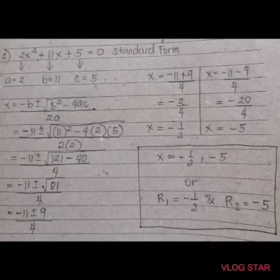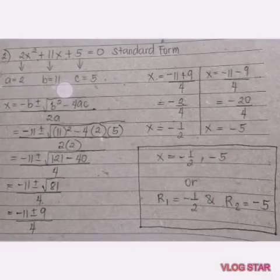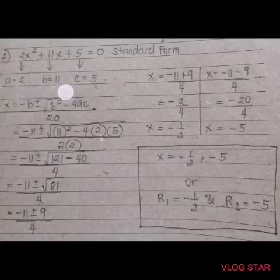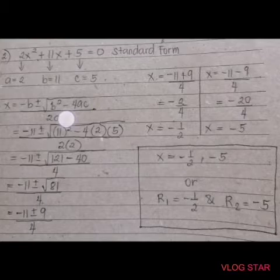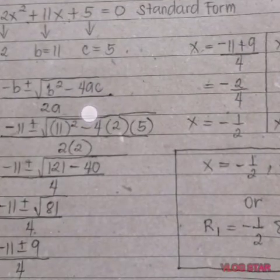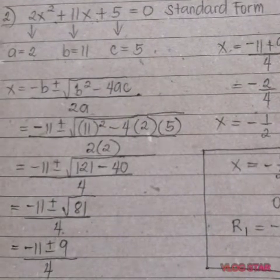Next is to identify the values of a, b, and c. The value of a is 2, the value of b is 11, and c is positive 5. And then write the formula for the quadratic formula, which is negative b plus or minus the square root of b squared minus 4ac, all over 2a.